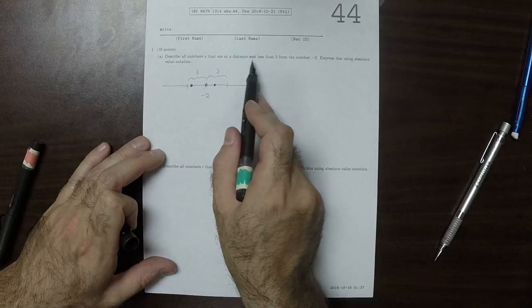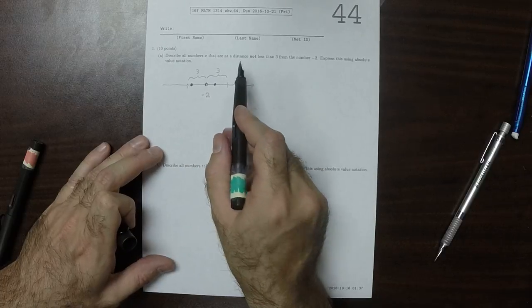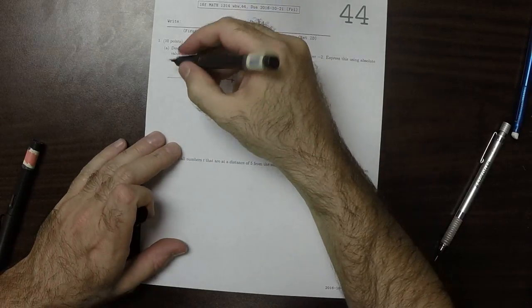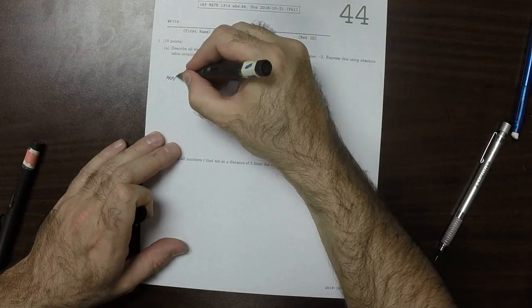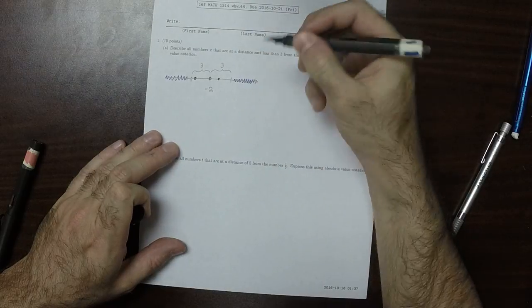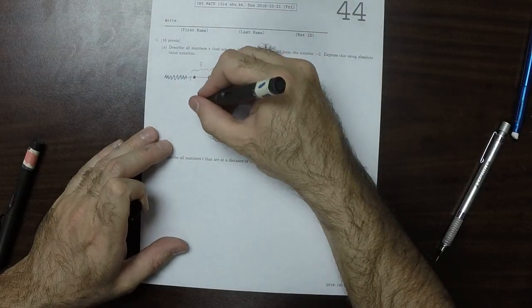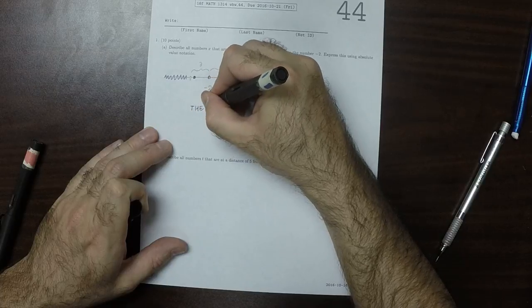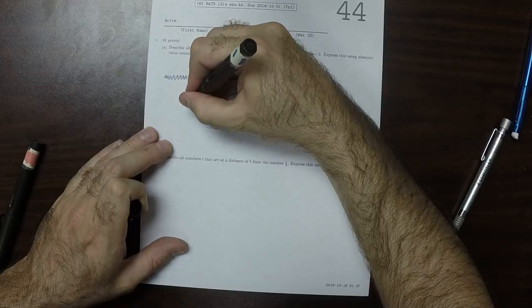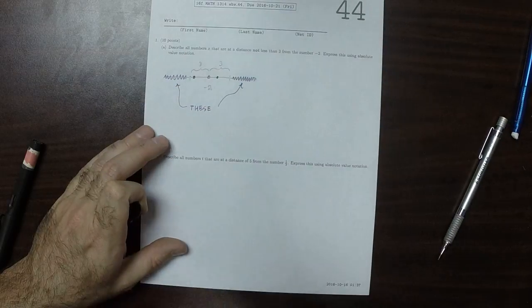So we want a distance that's not less than 3, which is to say more than 3. So what we're talking about is all of this. So we want these points, these blue points.